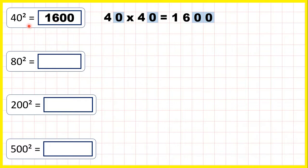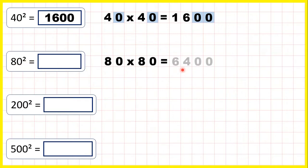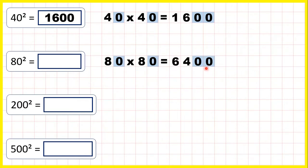So 40 squared is 1,600. So 80 squared means 80 times 80, which is 6,400, because 8 times 8 is 64, then if we have 2 end zeros in the multiplication, we need 2 end zeros in the answer. So that's 6,400.